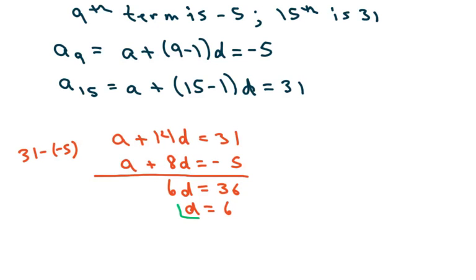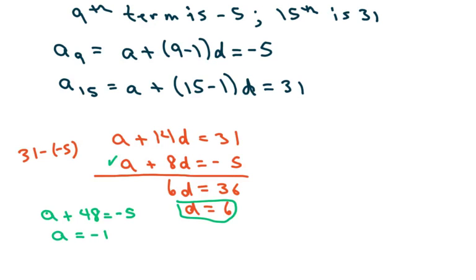We got our d. And to find a, we just plug it back in — I'm going to plug it into this one. So we have a plus 8 times 6, which is 48, equals negative 5. Subtract 48 from both sides and get negative 55.